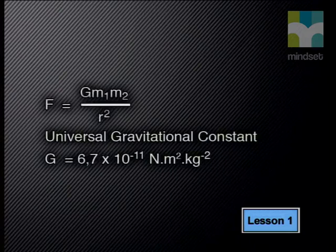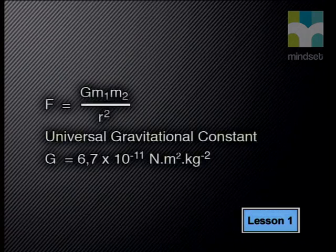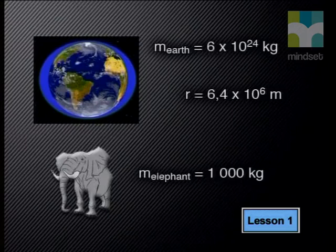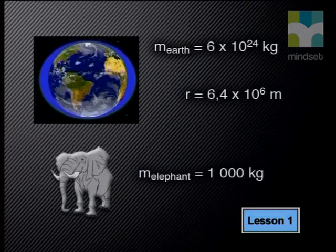Newton's law of universal gravitation can also be written as an equation: F equals the constant G times the product of the masses of the two objects, divided by the square of the distance of separation. The constant G is called the universal gravitational constant — it applies to all masses anywhere within our universe. Its magnitude is 6.7 times 10 to the power of negative 11 newton metres squared per kilogram squared. We can use this formula to calculate the force of attraction between the Earth and, say, an elephant. The Earth has a mass of 6 times 10²⁴ kilograms, the elephant has a mass of 1,000 kilograms, and their centres of mass are separated by one Earth's radius, which is 6.4 times 10⁶ metres.